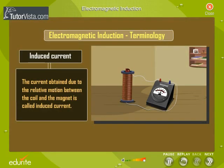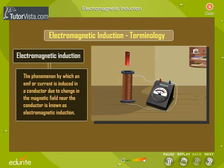The current obtained due to the relative motion between the coil and the magnet is called induced current. The phenomenon by which an EMF or current is induced in a conductor due to a change in the magnetic field near the conductor is known as electromagnetic induction.